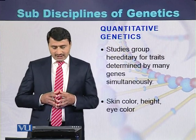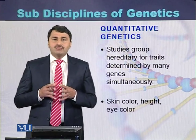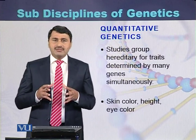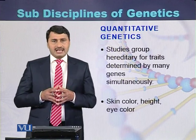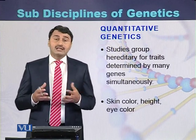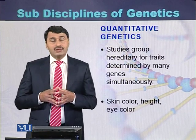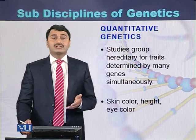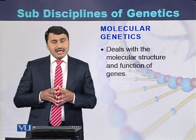Quantitative genetics deals with characters that are determined by more than one gene simultaneously. This kind of genetics is called quantitative genetics. Examples include skin color, height of humans, and eye color of humans — there are many genes which control eye color, height, and skin color in humans.